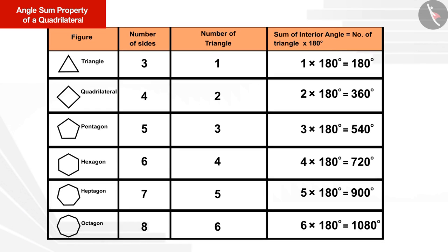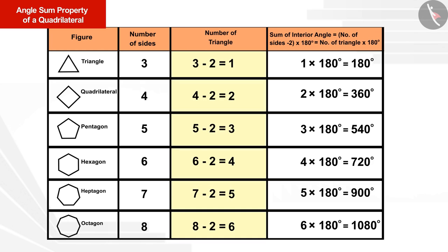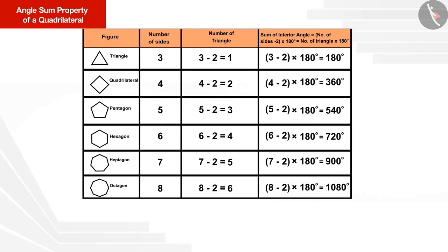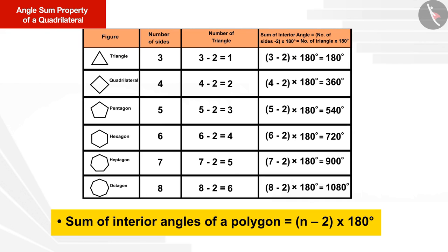Let us fill this table. Looking at the table, we see that the number of triangles formed in each polygon is two less than the number of sides of the polygon. With the help of this table we get the formula for the sum of all interior angles of an n-sided polygon, where n is the number of sides: sum = (n - 2) × 180 degrees.